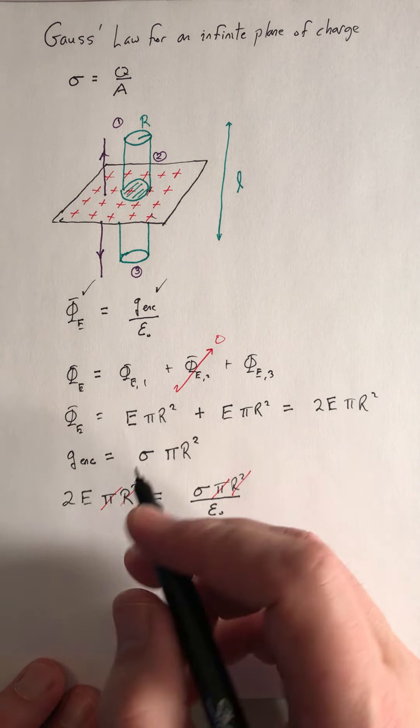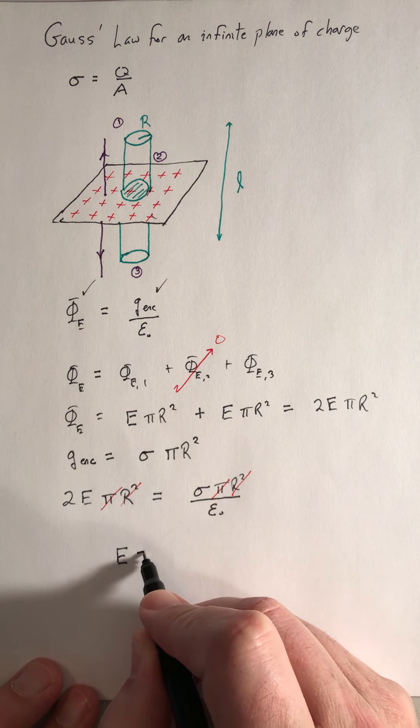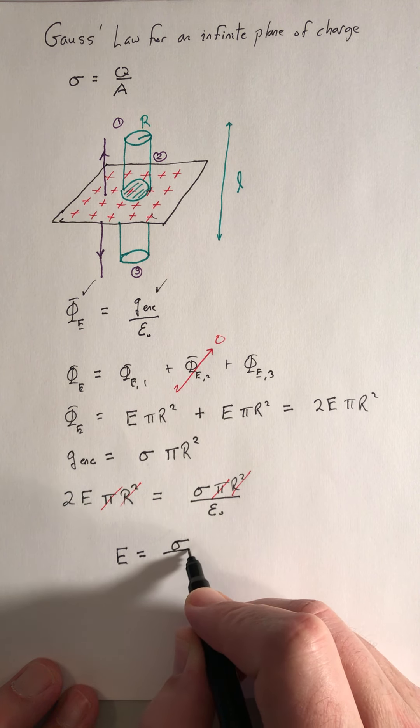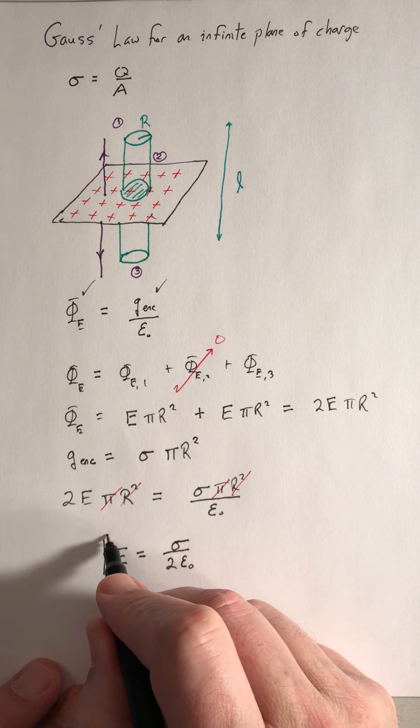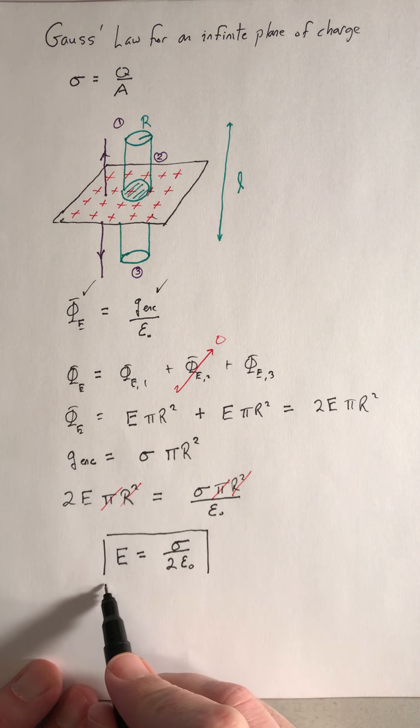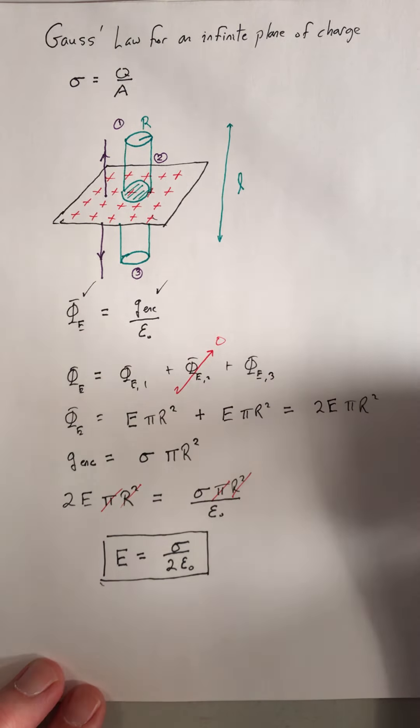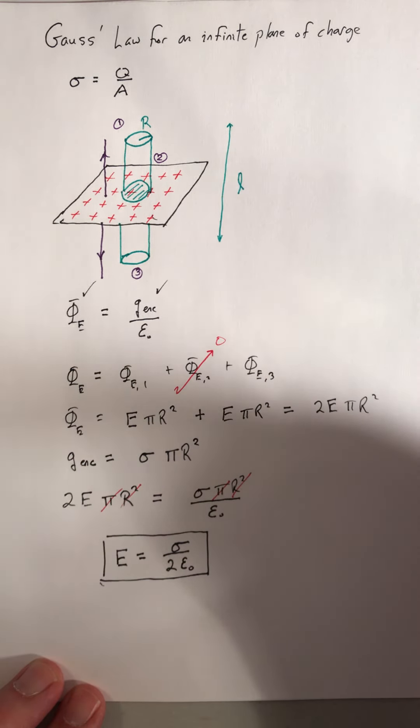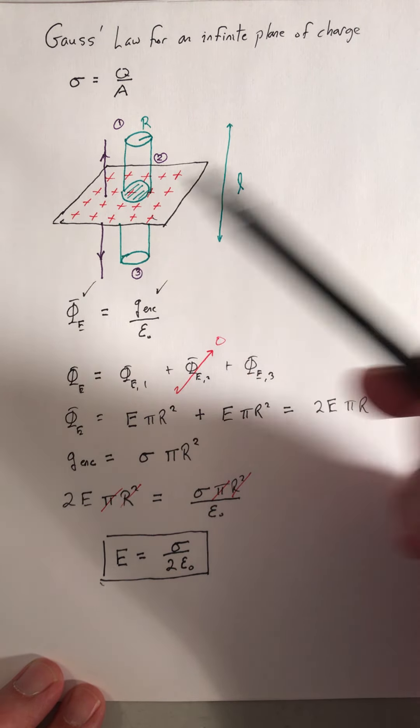And for an infinite plane of charge, we have that the magnitude of the electric field is going to be sigma over 2 epsilon naught. And then in terms of direction, if it is a positive uniform sheet of charge, the electric field lines are going to point away from it. And if it's a negative sheet of charge, they would point in towards it.